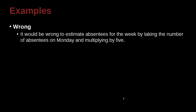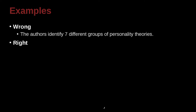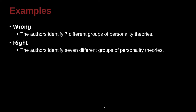It would be wrong to estimate absentees for the week by taking the number of absentees on Monday and multiplying by 5. Remember: if you're writing a number less than 10, you should spell out the word. However, because we're talking about a formula involving multiplying, in that case you have to write the numeral — so 5 is correct here. Compare: 'The authors identify seven different groups of personality theories' — since it's less than 10 and not in a formula, you spell it out.